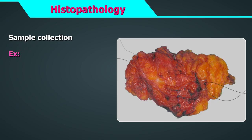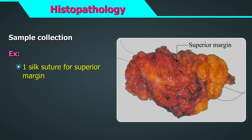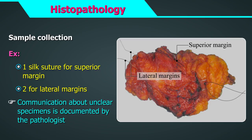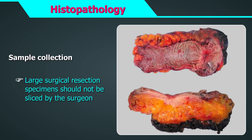For example, one silk suture for superior margin, two for lateral margins, etc. This should be clearly defined in the SOPs. Any orientation of large specimens, if unclear, should be immediately communicated with the clinician and clarified. Such communication shall also be documented by the pathologist on the request form. Large surgical resection specimens should not be sliced or opened by the surgeon, but sent directly to the laboratory.